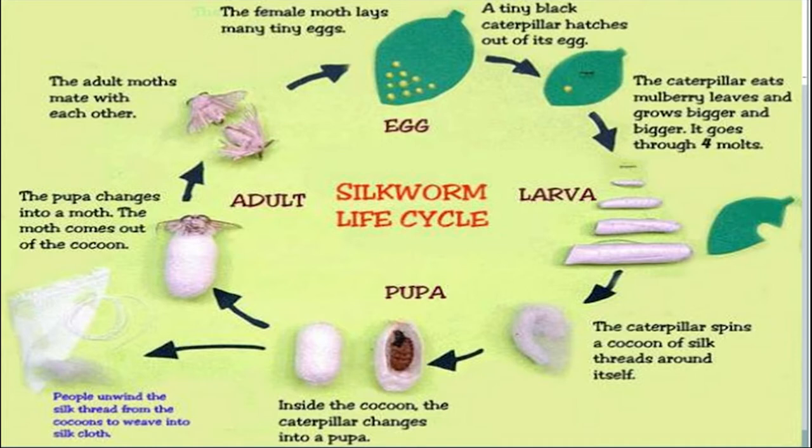The pupa changes into a moth. The moth comes out of the cocoon into the adult stage. The adults then mate with each other and form tiny eggs. This is the life cycle of silkworm.